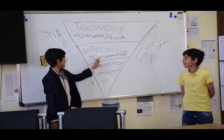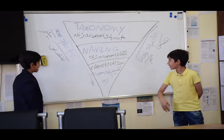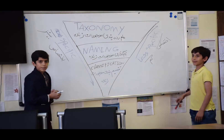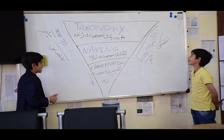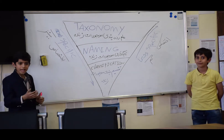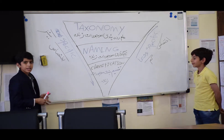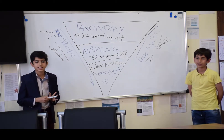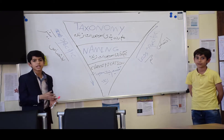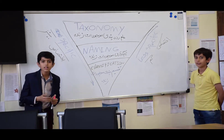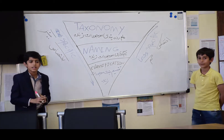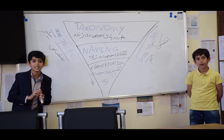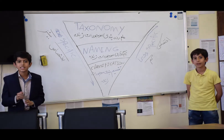This is taxonomy, this is naming, this is classification. When we are going up, the living organisms are less specific. And when we are going down, the living organisms are more specific. The first scientist that tried to classify living organisms is Carl Linnaeus, in the 18th century. Thank you.